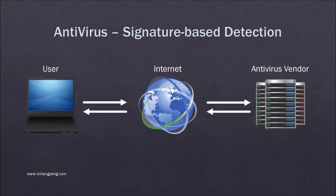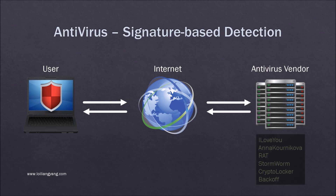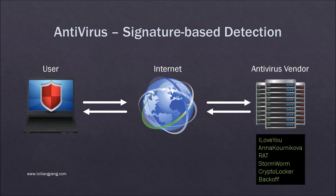Here is an example of how an antivirus system works. Firstly, after the user has installed the antivirus system, the user will need to be continuously connected to the internet in order to receive updates from the antivirus vendor. These updates are known as signatures, which are downloaded into the user's computer to check against the files written to the user's computer.